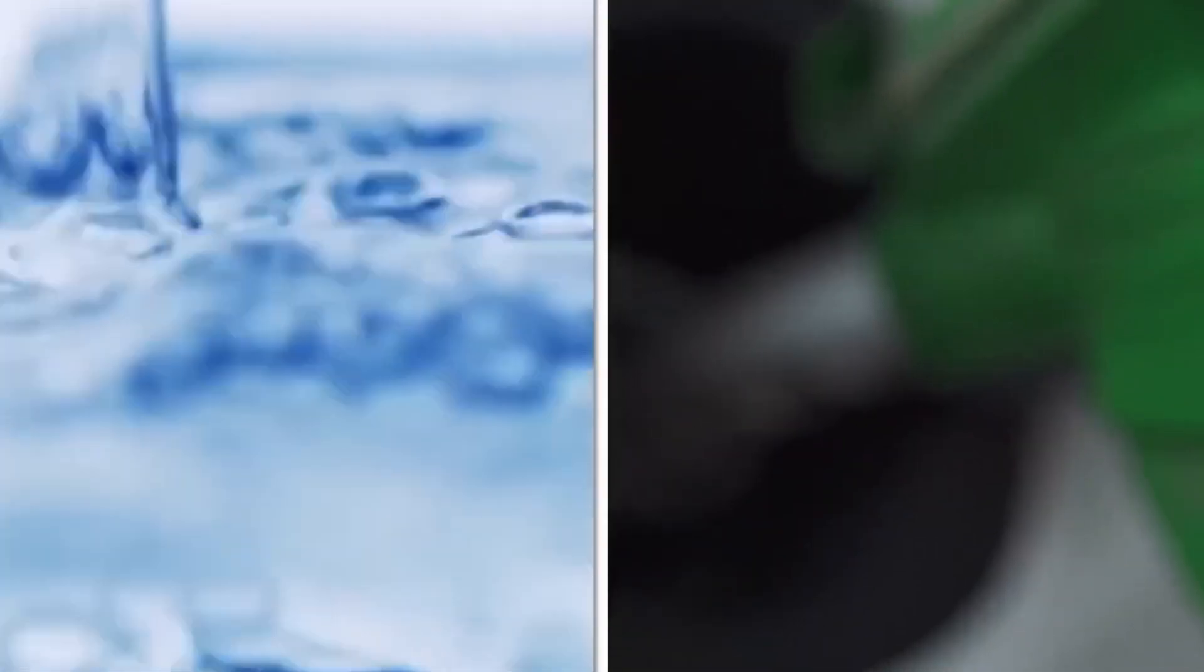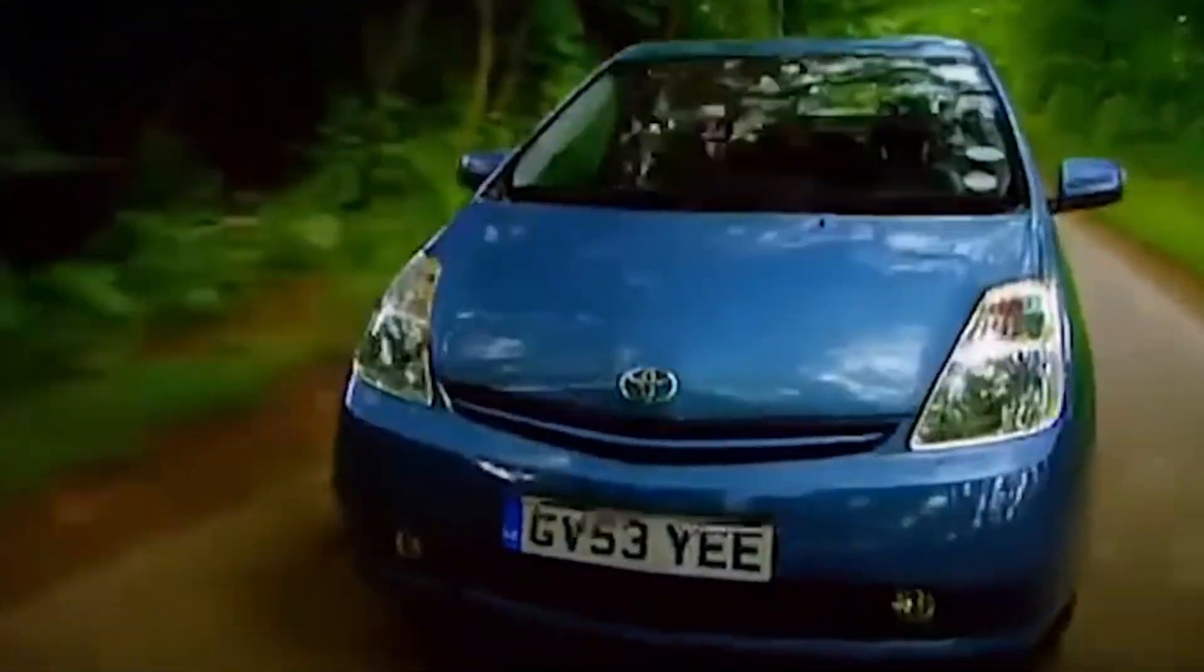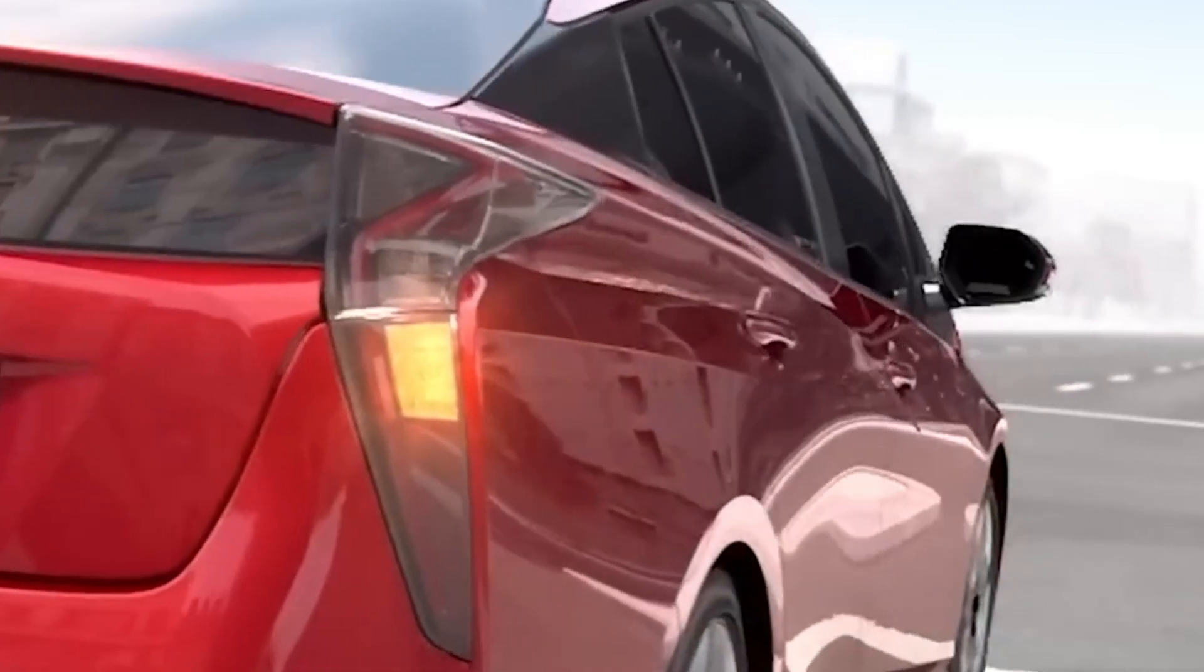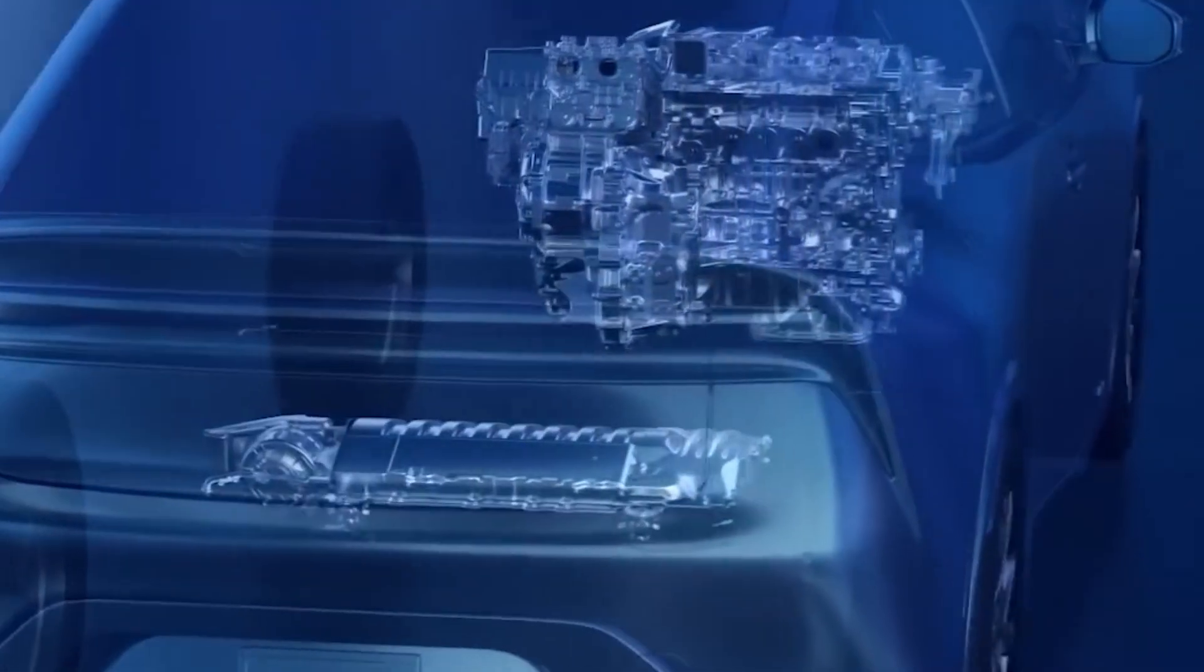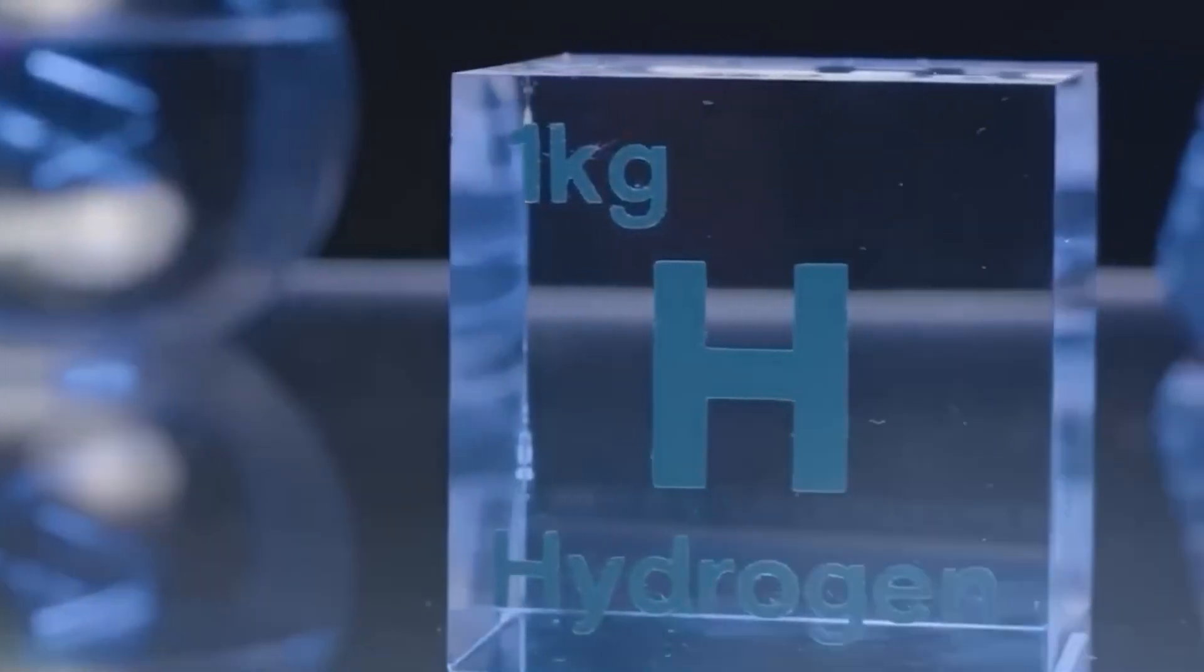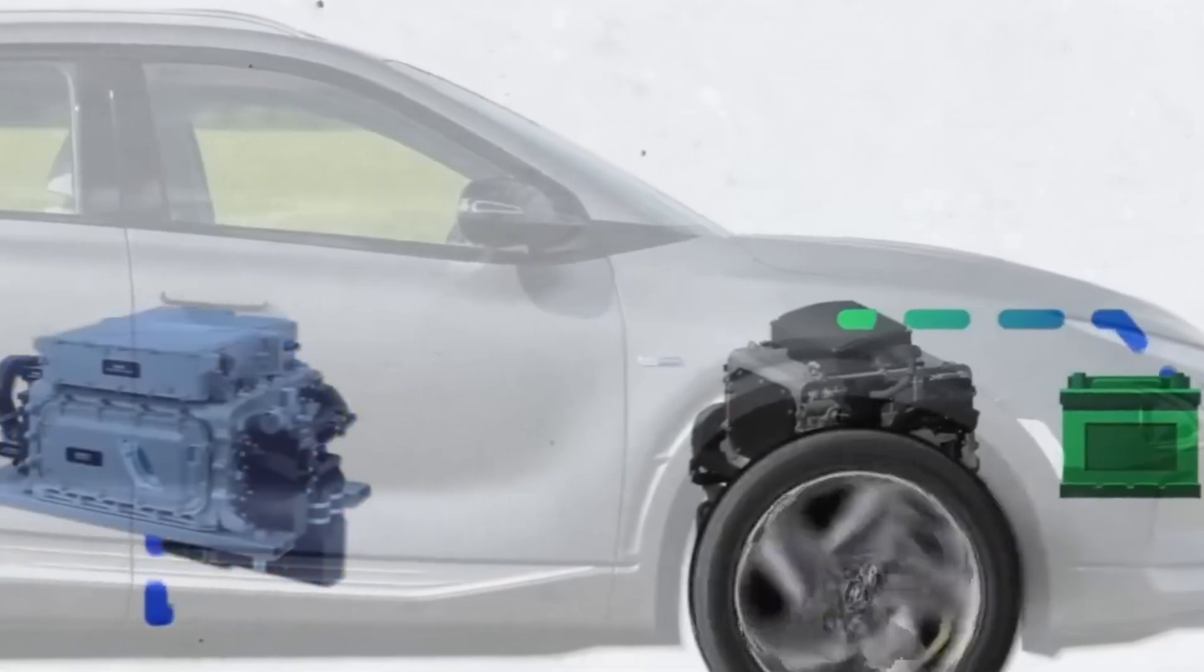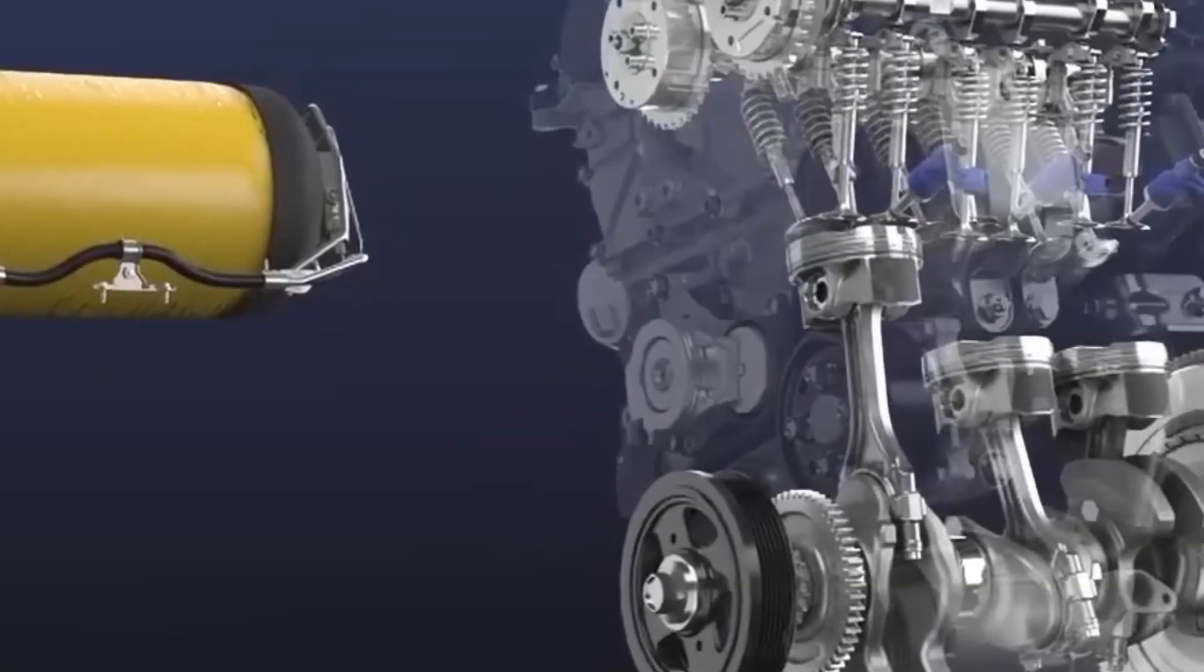To address the global demand for cleaner and more efficient vehicles, Toyota has developed a wide array of powertrain options, ranging from hydrogen fuel cell vehicles (FCEVs) to plug-in hybrid electric vehicles (PHEVs) and battery electric vehicles (BEVs). These diverse technologies are designed to meet the varied needs of consumers worldwide while advancing Toyota's commitment to achieving carbon neutrality. Recognizing the diversity in energy sources, infrastructure, and environmental policies across different regions, Toyota adopts a tailored approach rather than a one-size-fits-all solution.